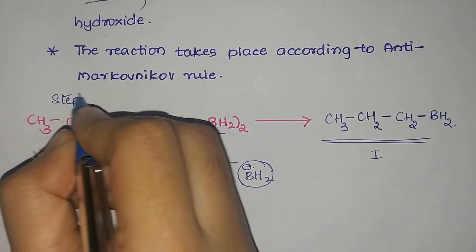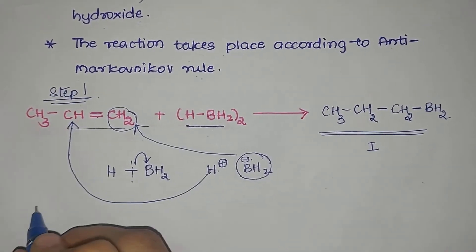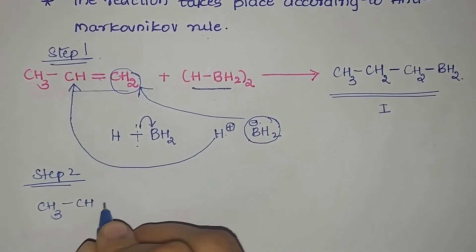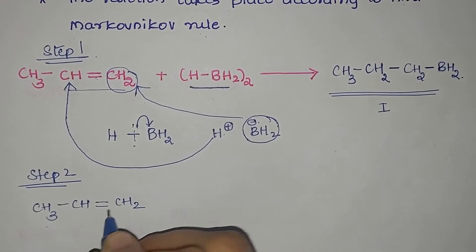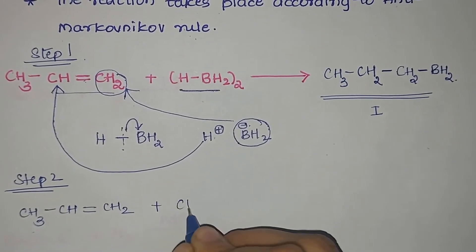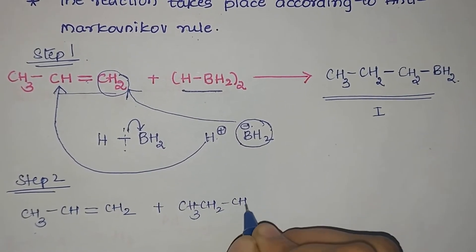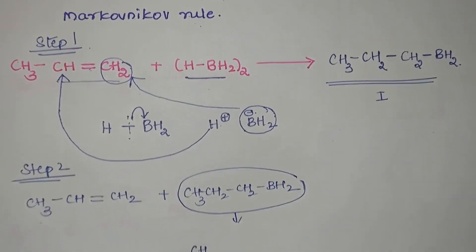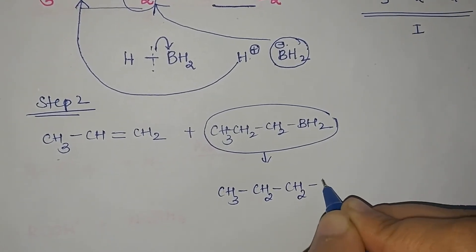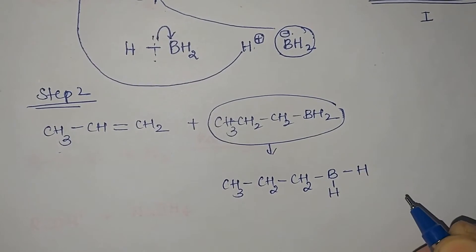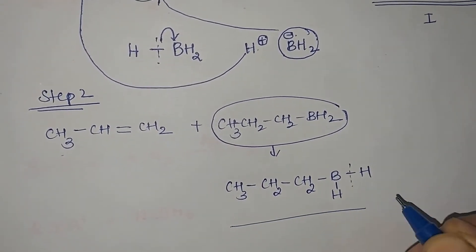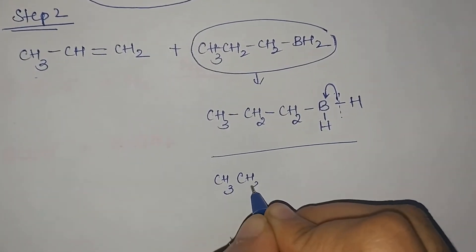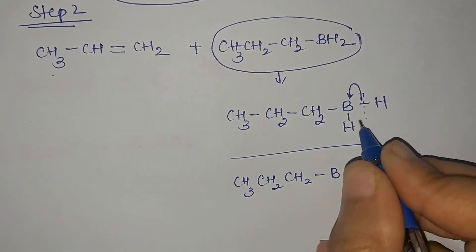We go to step two. In step two, we retain the alkene CH3–CH=CH–CH2 as it is, because we need trialkyl. The next reactant here is CH3CH2CH2BH2. We show the dissociation of this reactant again. Hydrogen can be removed as H+, so the electron pair shifts to boron and hydrogen is removed as H+.